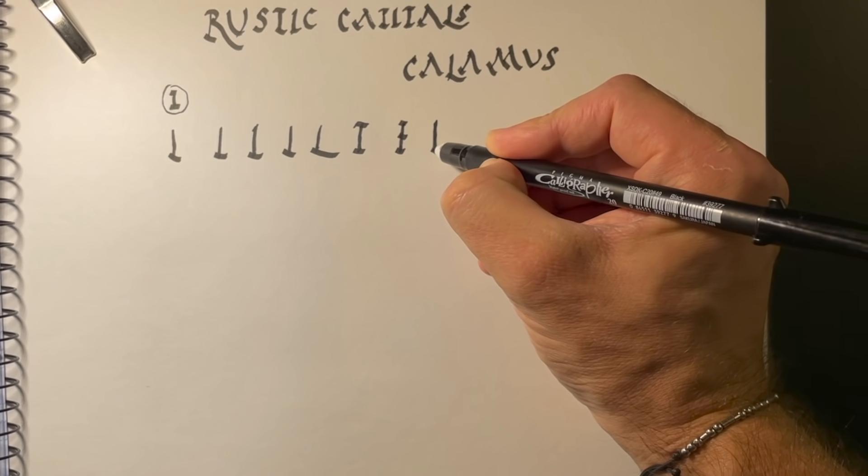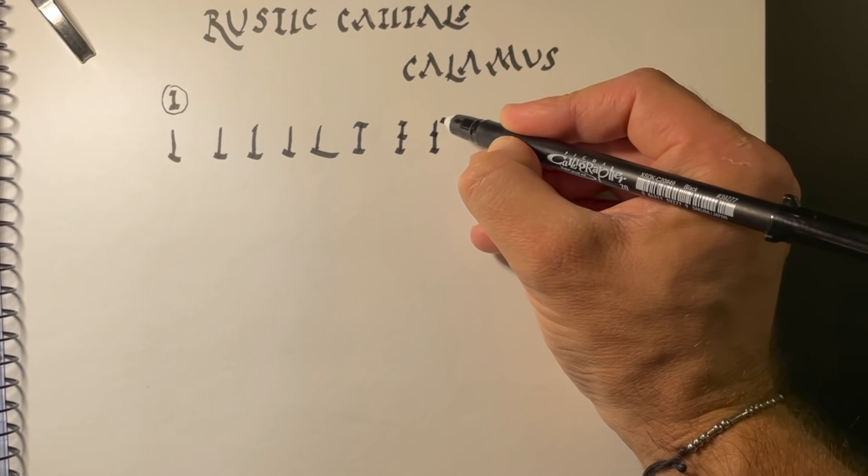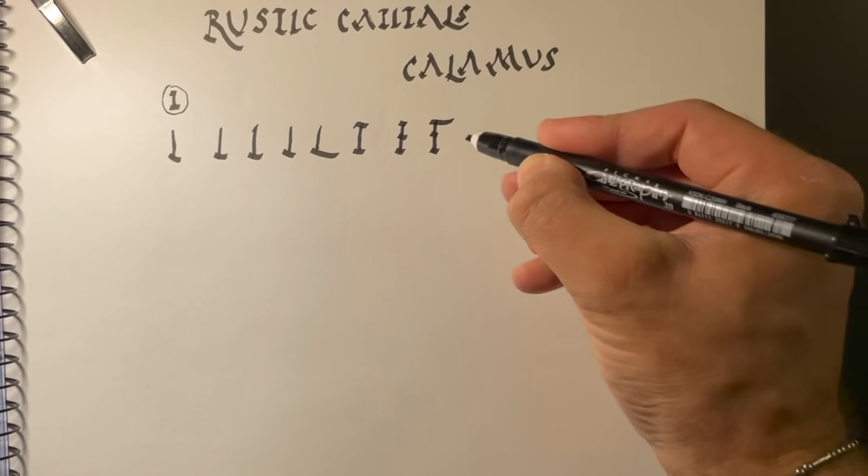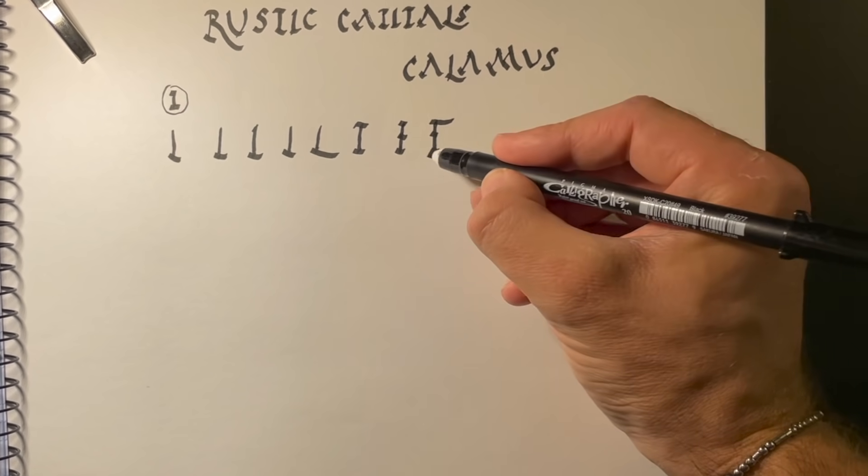Now, say we start to make an E, and instead of a short one, we make a longer tab. Well, that's an F. So, that's an E, and that's an F.